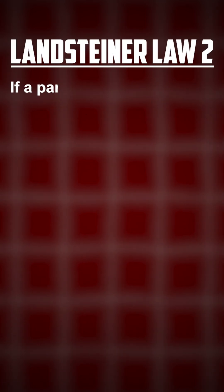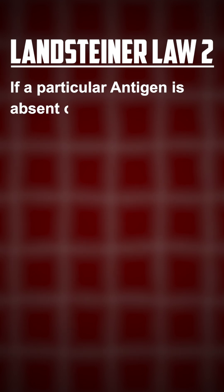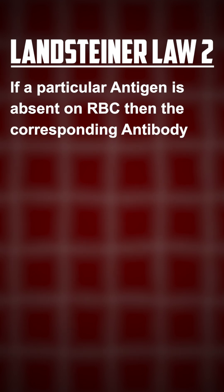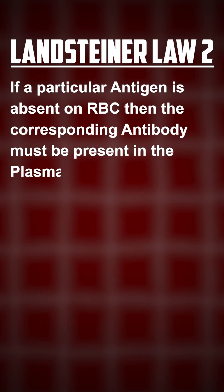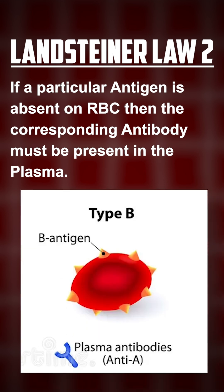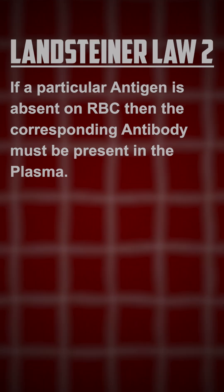The second law states that if a particular agglutinogen or antigen is absent in an RBC, then the corresponding antibody must be present in the plasma. So what does this law mean? If a particular antigen — for example, the A antigen — is absent in the RBC, then the A antibody must definitely be present in the plasma.